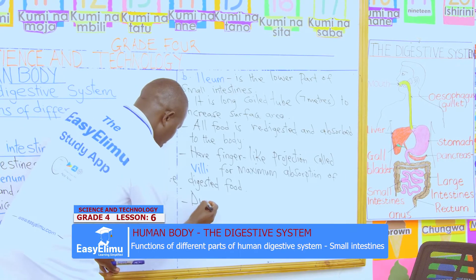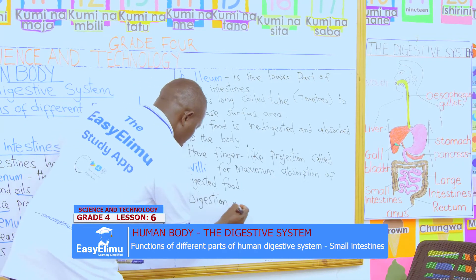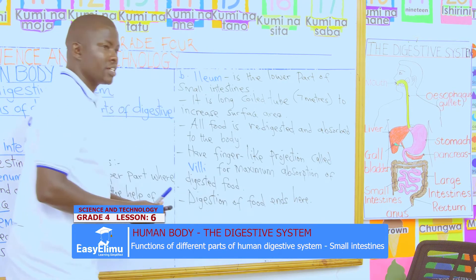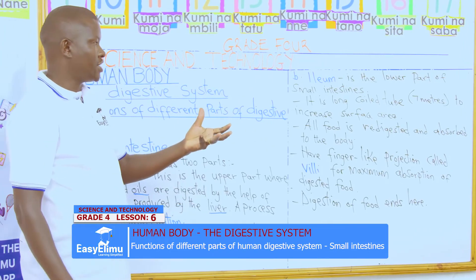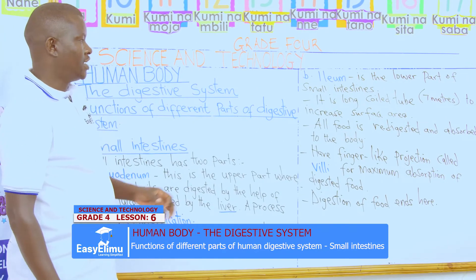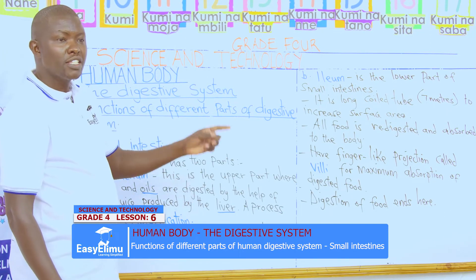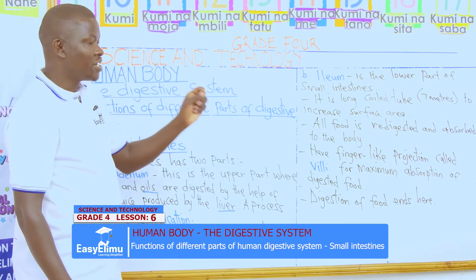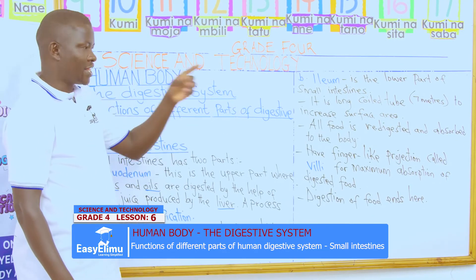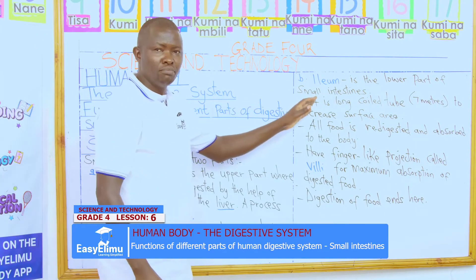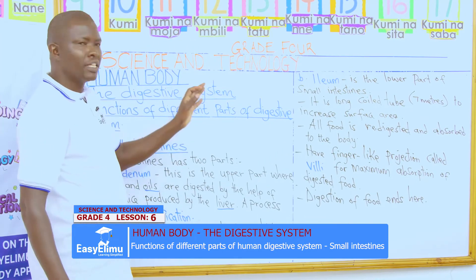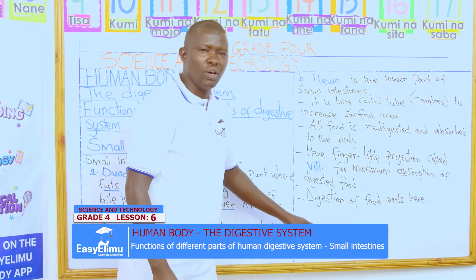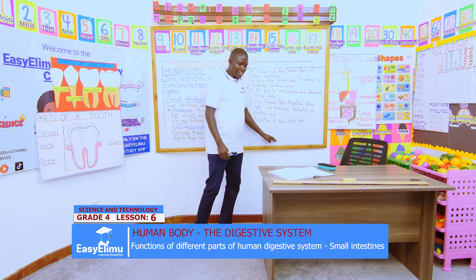Remember: at the mouth, starch was digested. At the stomach, proteins were digested. Vitamins, mineral salts, alcohol, and medicinal drugs are never digested — so they are absorbed directly at the stomach into our body. Then at the ileum, redigestion of all the foods is done again, and absorption of the digested food is done into our body. So digestion of food ends at the small intestine.